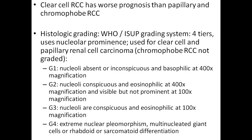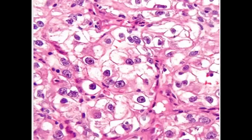Remember that clear cell renal cell carcinoma has the worst prognosis compared to papillary and chromophobe types. This classification based on nucleoli visibility is only applicable for clear cell carcinoma and papillary renal cell carcinoma; it is not applicable for chromophobe renal cell carcinoma. This picture of G3 clear cell carcinoma taken at 10x shows the nested or alveolar architecture with clear cells, clearly visible rounded cherry-red nucleoli in all the cells, but no prominent nuclear pleomorphism and no sarcomatoid or rhabdoid differentiation — which is why this case was signed out as G3.